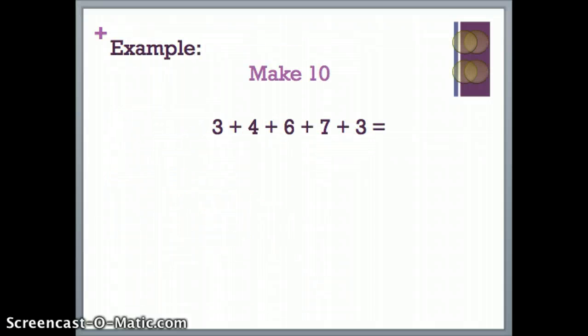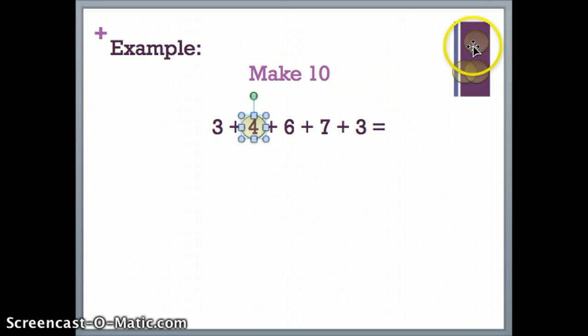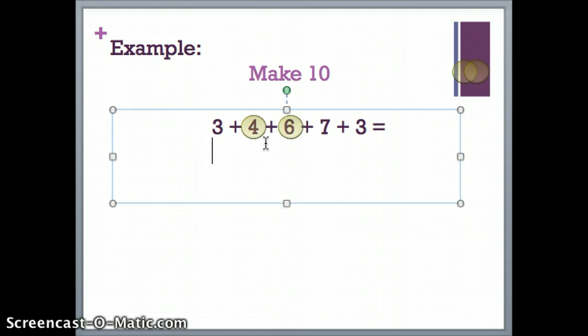Now let's use addition combinations to solve multiple addend problems. We're going to solve 3 plus 4 plus 6 plus 7 plus 3. I'm going to start with make 10 combinations. I'm going to look at the equation and see if I can add two numbers that make 10. I see that 4 and 6 are in the problem, and I know 4 plus 6 equals 10.